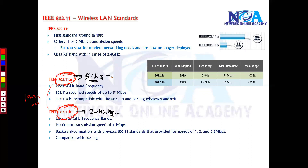Comparing throughput between them: 802.11a can support up to 54 Mbps maximum throughput. Of course, this throughput will vary depending on the number of connected users and will come down automatically when you have more users. 802.11b can support up to 11 Mbps throughput.